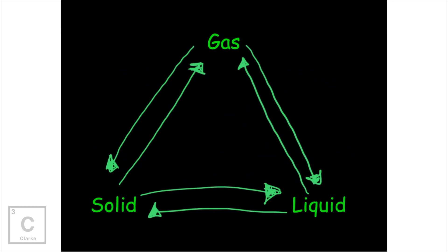First, let's make sure that we remember all of the phase changes. Now you know a lot of these, but there might be a couple of new ones. If we've got a solid — I often think of ice — and we're going from a solid to a liquid, we just call that melting. And then the reverse, if we're going from liquid water to solid ice, this is freezing. Very common ones.